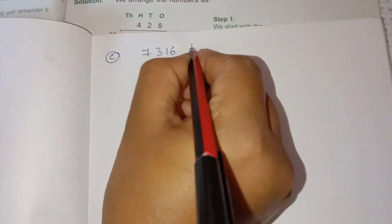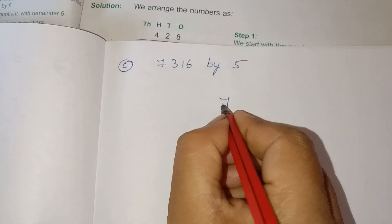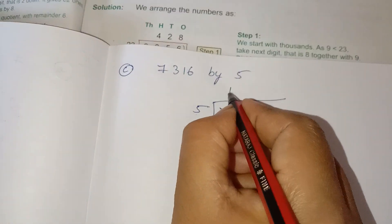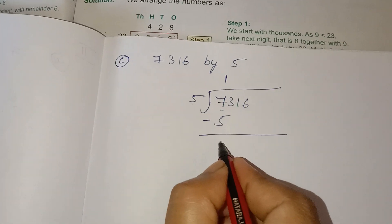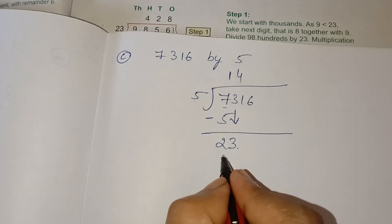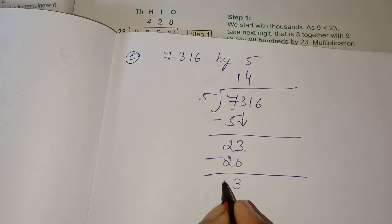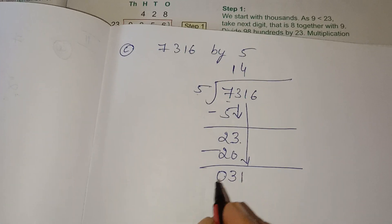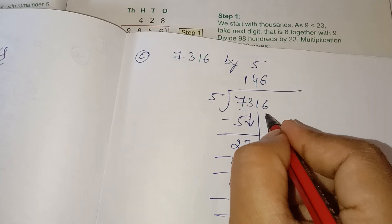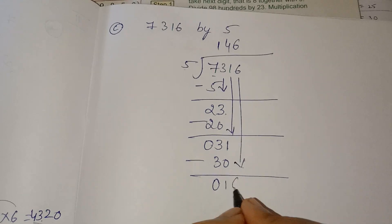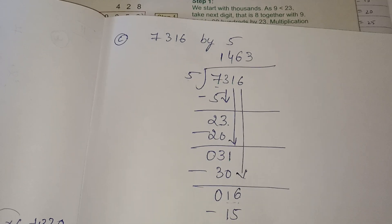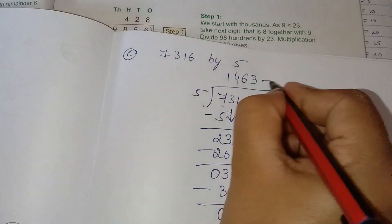Next one: write it down. Take 1 digit. 5 ones are 5. Subtract — take 1 number down. 5 fours are 20. Subtract — take another number down. 5 sixes are 30. Take the last number down — I have 16. 5 threes are 15. Subtract — I get a remainder of 1. This is the remainder and this is the quotient.